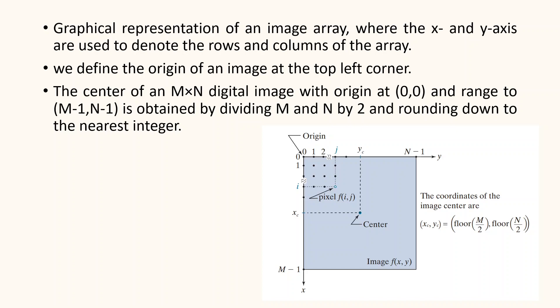You also notice that the center of an m×n digital image with origin at (0,0) and range to (m-1, n-1) can be obtained by dividing m and n by 2 and rounding down to the nearest integer.